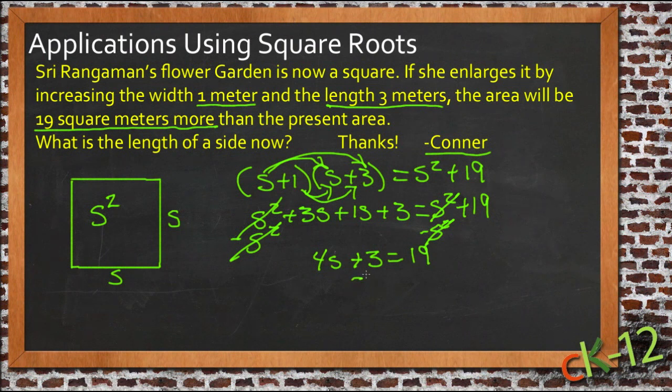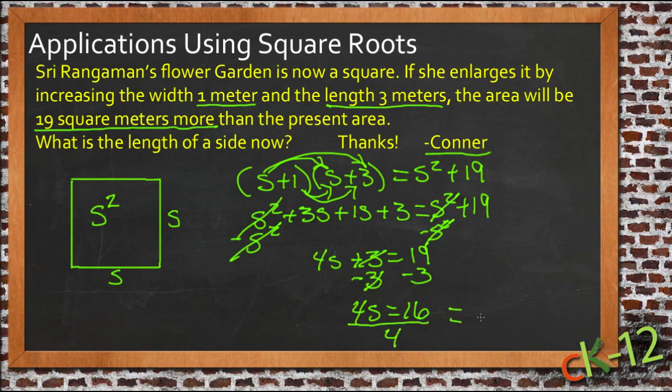So now we'll subtract 3 from each side, this will go away, and we'll get 4S equals 16. And if 4S equals 16, then when we divide both sides by 4, we get S equals 4.